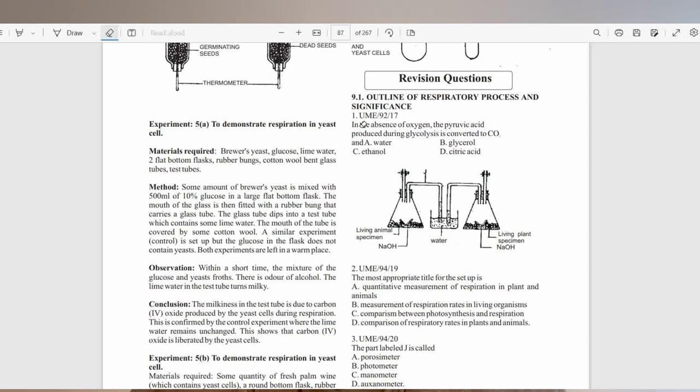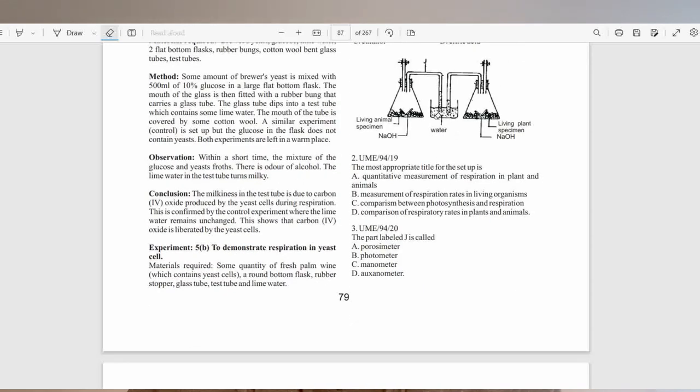Number one question. In the absence of oxygen, the pyruvic acid produced during glycolysis is converted to CO2 and ethanol. The right answer to this question is ethanol. Because pyruvic acid produced during glycolysis in the absence of oxygen is converted into CO2 and ethanol in plants. In animals, that would be lactic acid.